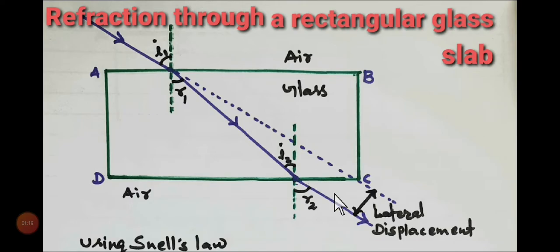There is an increment in speed. And according to the rules of refraction, the ray will divert. The ray will bend away from the normal, away from this.